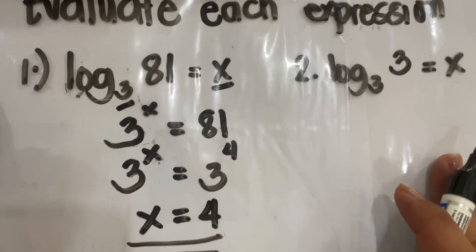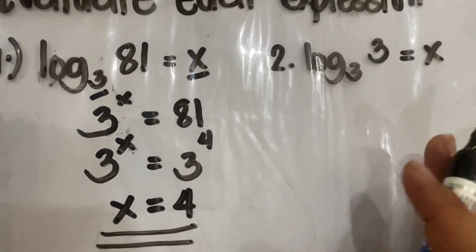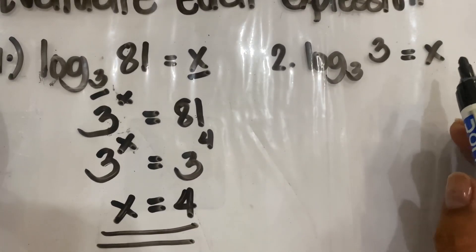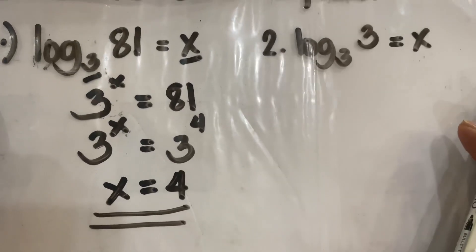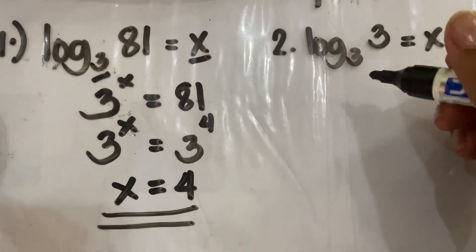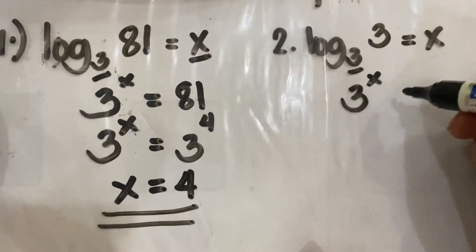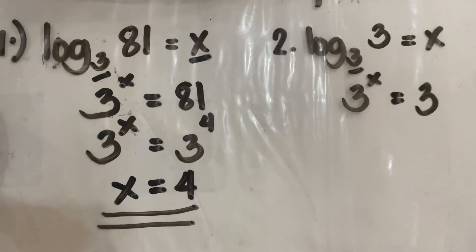For number 2, we have here the logarithm of 3 to the base 3 equals x. So same process, we have to transform this into the exponential form. So that will be the base is 3, the exponent is x, and we have here the result is 3.